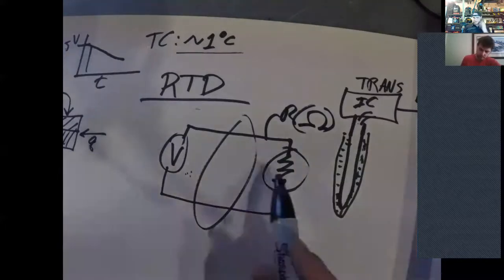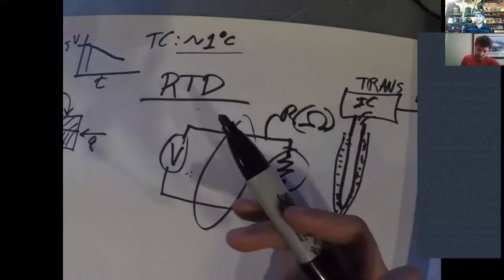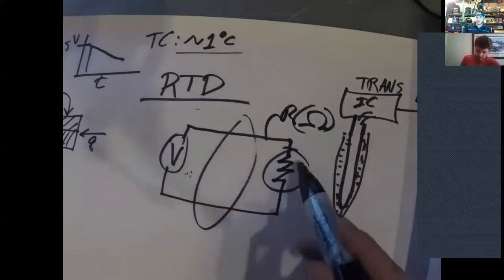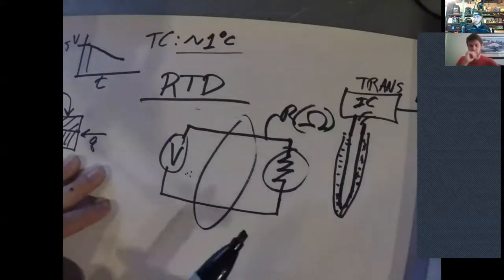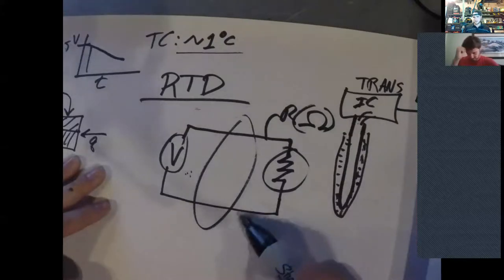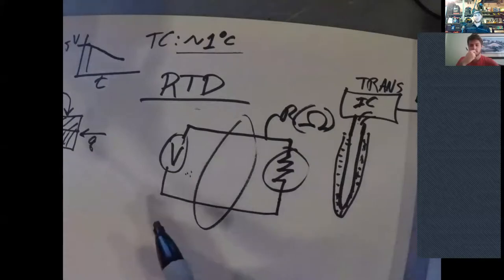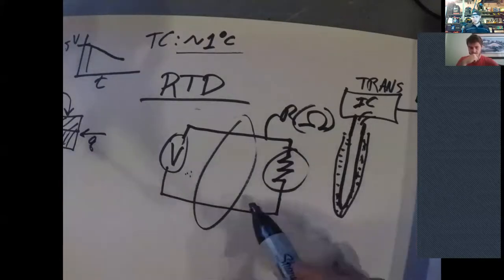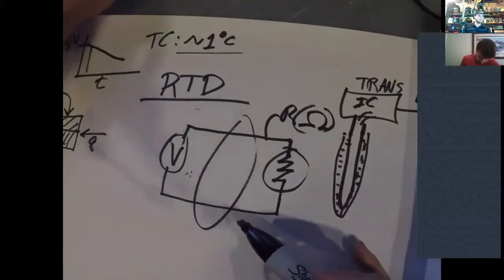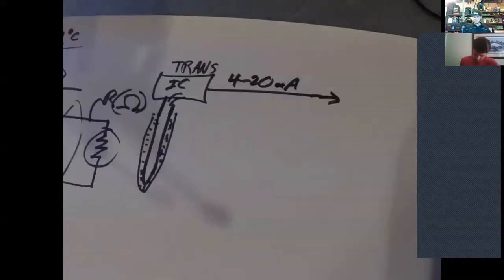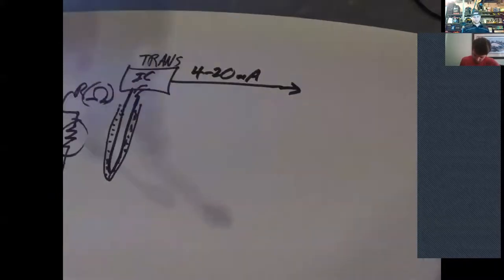Now over here, I showed you, this is a two wire RTD. And so you have your wires running back to your controller and these can be really long. Like, you know, you could have a hundred feet or more of wire. Does anybody see a problem with this setup?